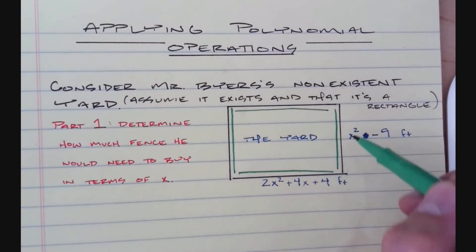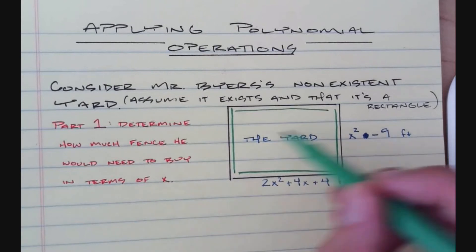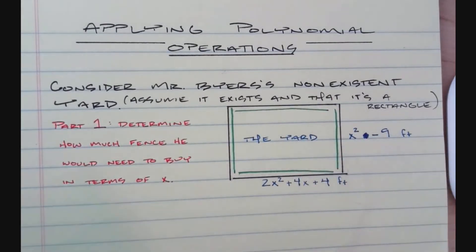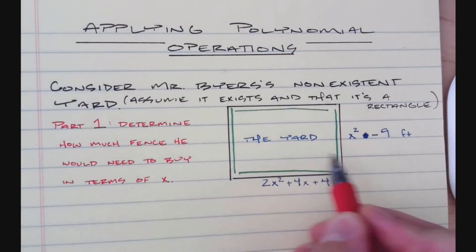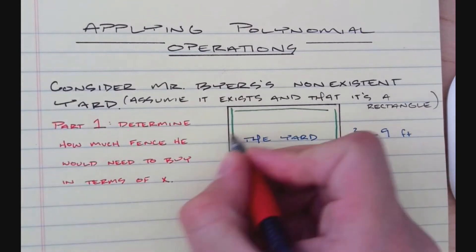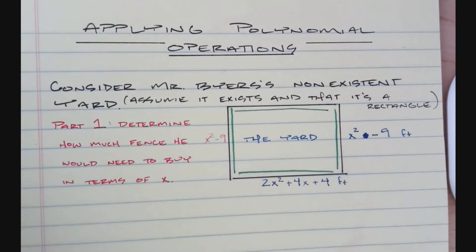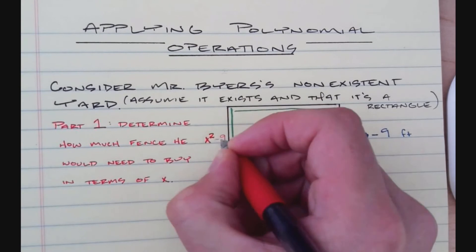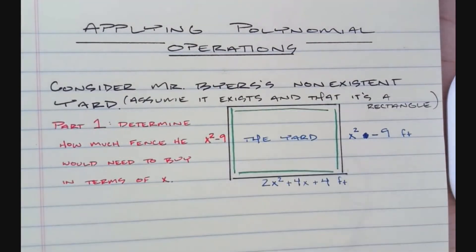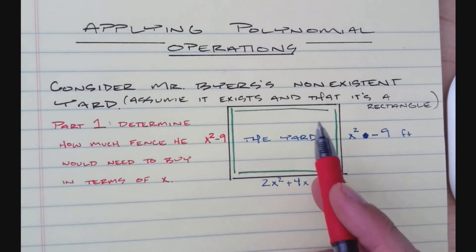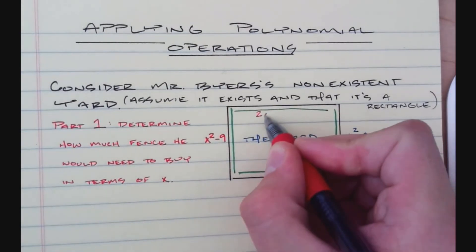I need to go all the way around, so I need to look at this in terms of four pieces: two sides, a top, and a bottom. Since it's a rectangle, opposite sides are equal. So this side is also x squared minus 9. Similarly, since the bottom is 2x squared plus 4x plus 4, the top has to be the same.